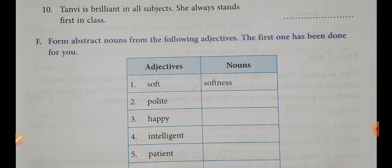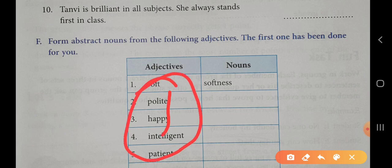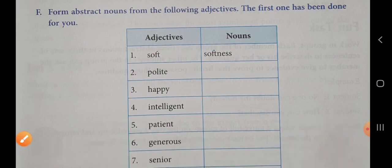The first one has been done for you. What you will have to do is form abstract nouns from the adjectives. You can see that adjectives are given in this column. You will have to form abstract nouns from each of these adjectives. So we will start with the first one.